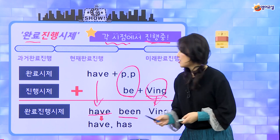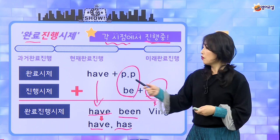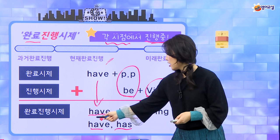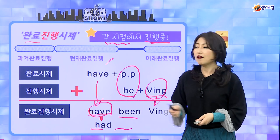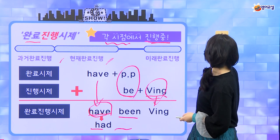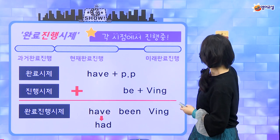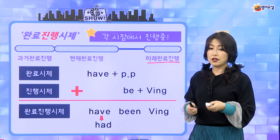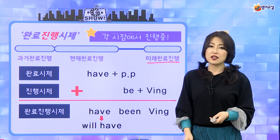현재일 때는 have랑 has를 쓰면 현재 완료 진행이 돼요. 과거 완료 진행은 have/has를 had로 바꾸면 had been + 동사 ing가 되는 거죠. 미래 완료 진행은 have를 가지고 시제를 표현하는 거잖아요, will have been + 동사 ing가 돼요. 이렇게 완료 진행 시제 세 개를 한 방에 정리할 수 있어요.